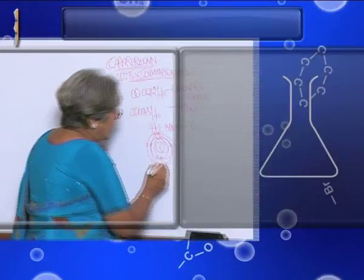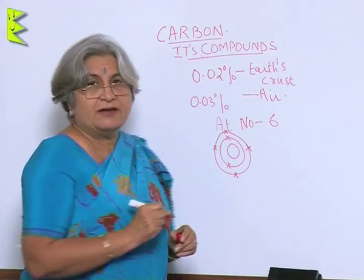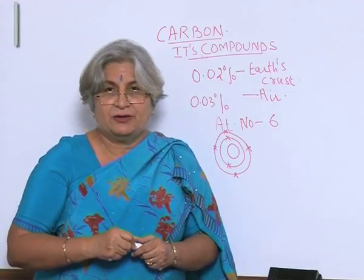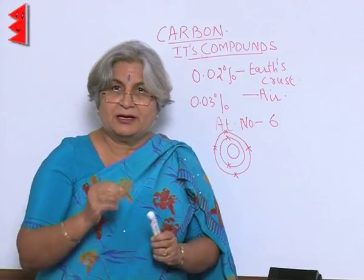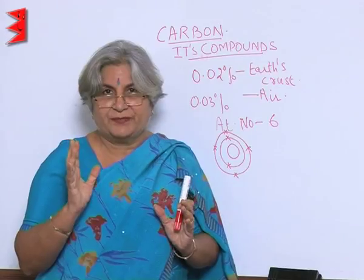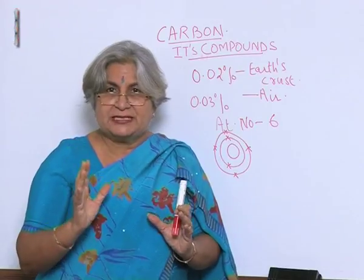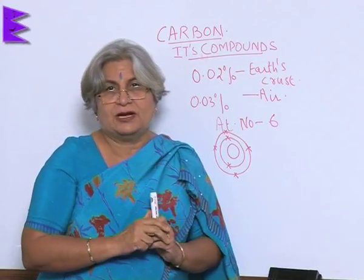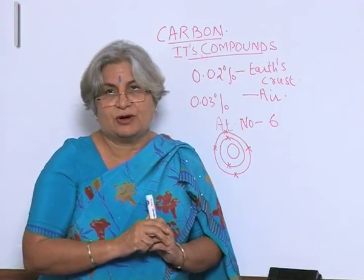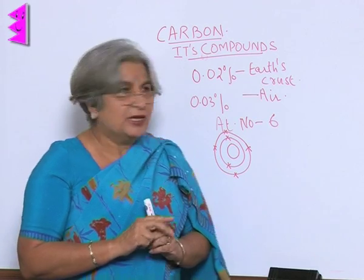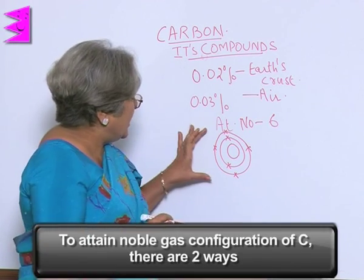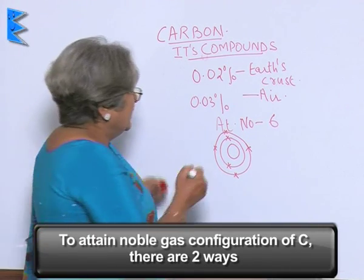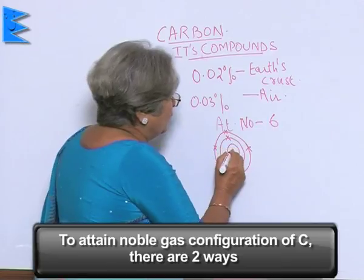As you know, every atom is all the time striving to attain a noble gas configuration, which means there will be 8 or 2 electrons in the outermost orbit. To be able to achieve that situation, there can be 2 ways.